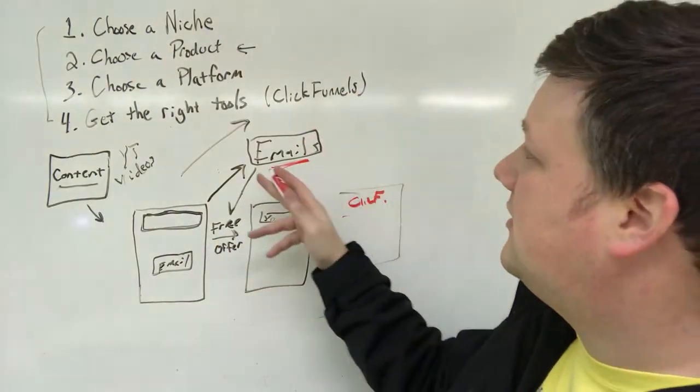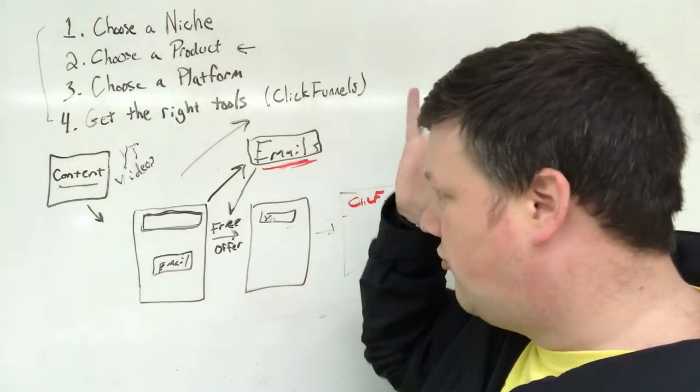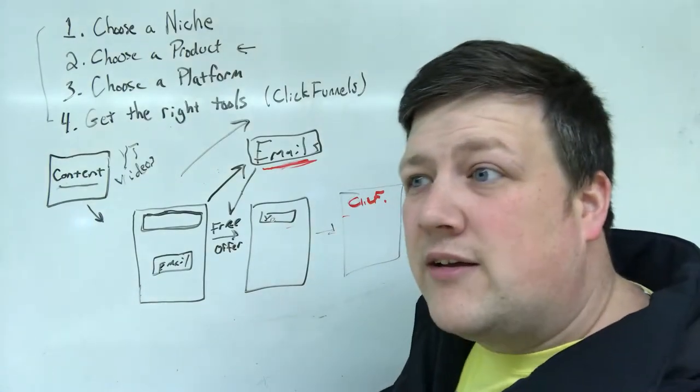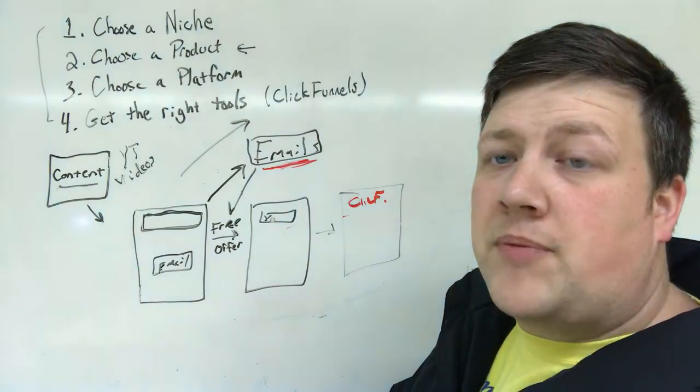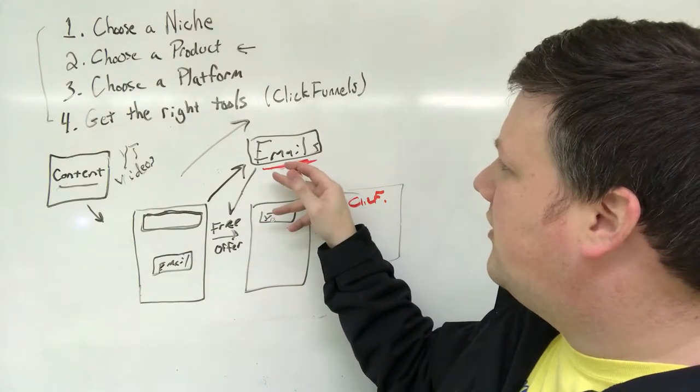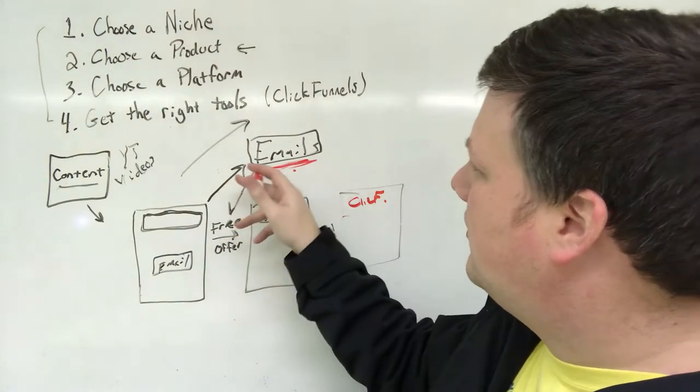So what ClickFunnels does is it gives you some email autoresponders. So now that they're in your list, and they go through, and you're able to track if they bought the product or not. If they haven't, then maybe after a day or two, it will send out another email.